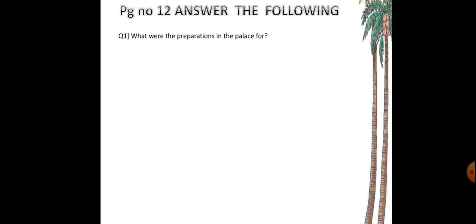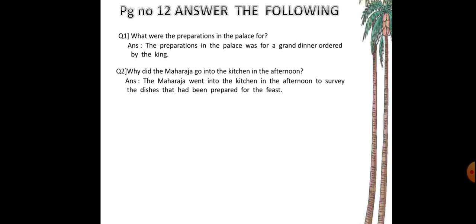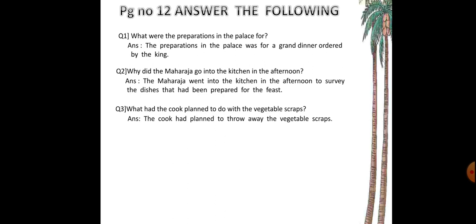Answer the following. This is on page number 12. Question one: What were the preparations in the palace for? Answer: The preparations in the palace were for a grand dinner ordered by the king. Question two: Why did the Maharaja go into the kitchen in the afternoon? Answer: The Maharaja went into the kitchen in the afternoon to survey the dishes that had been prepared for the feast. Question three: What had the cook planned to do with the vegetable scraps? Answer: The cook had planned to throw away the vegetable scraps.